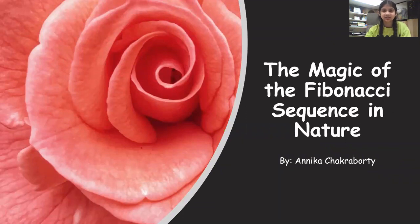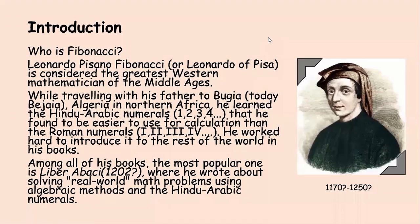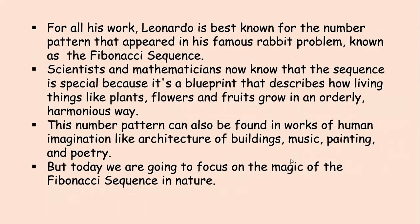The Magic of the Fibonacci Sequence in Nature. If you are wondering who is Fibonacci — Leonardo Pisano Fibonacci, or Leonardo of Pisa, is considered the greatest Western mathematician of the Middle Ages. When he was traveling with his father to Bujia, today Bejaya, Algeria in Northern Africa, he learned the Hindu-Arabic numerals, which he found easier to use for calculation than the Roman numerals he had used before. He worked hard to introduce them to the rest of the world in the books he wrote. Among all his written books, the most popular one is Liber Abaci, where he wrote about solving real-world math problems using algebraic methods and Hindu-Arabic numerals. For all of his work, Leonardo is best known for the number pattern that appeared in his famous rabbit problem, known as the Fibonacci Sequence.